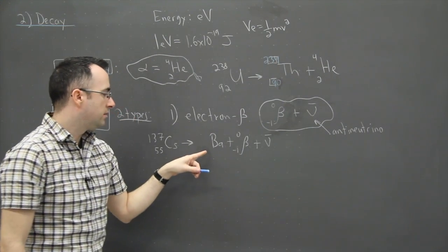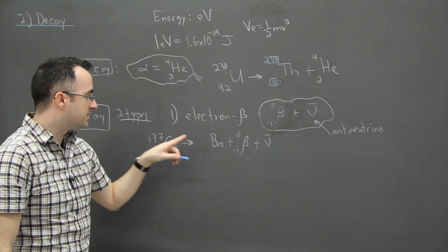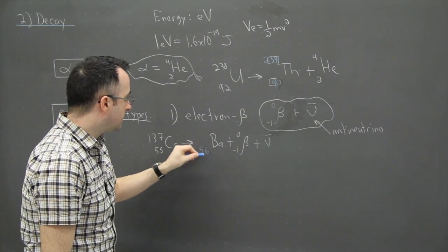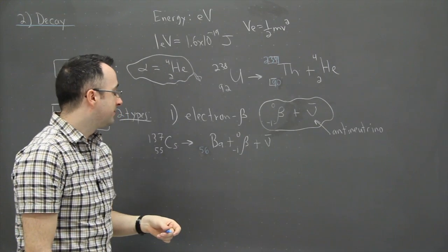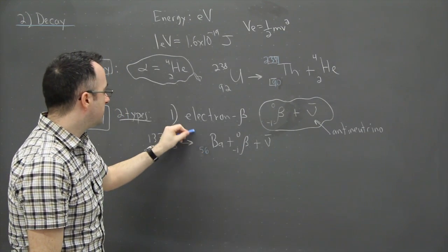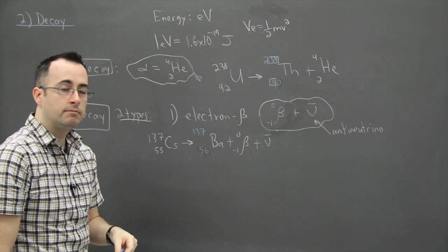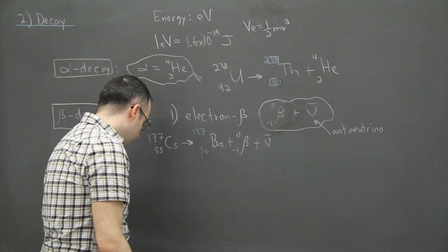So this one right here, well, 55 equals something minus one. So this actually is going to be 56. So barium is element number 56. And this top number here is just going to be the same. So we're going to actually call it barium-137. So that's an example of how to deal with this one.